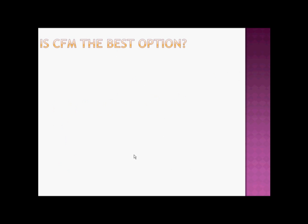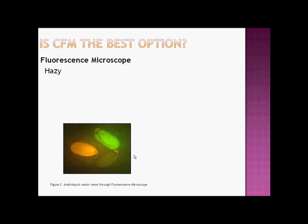Is CFM the best option? The confocal fluorescence microscope is more advantageous than the regular fluorescence microscope because the CFM eliminates the out-of-focus haze that occurs with regular fluorescence samples. The CFM has fine focus and the ability to create 3D images by computer. The fluorescence microscope shows the entire sample, but due to its resolution, only a small part of the sample is in focus. Both microscopes contain a pinhole filtering screen, but the CFM has a smaller pinhole opening, allowing less out-of-focus light to enter the PMT compared to the fluorescence microscope, which has a wider opening.